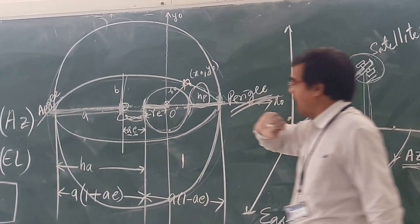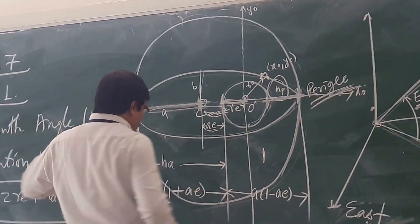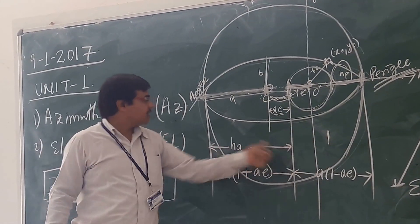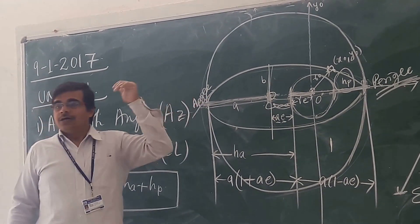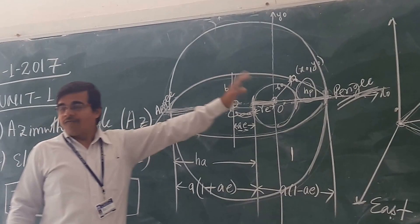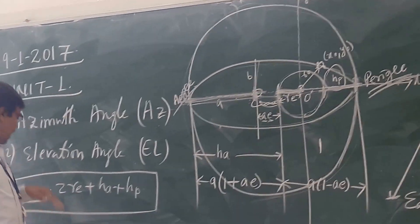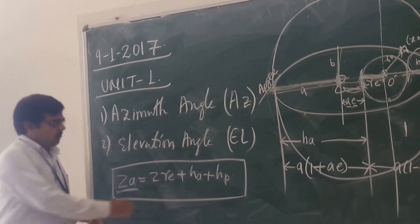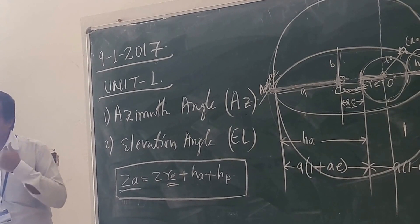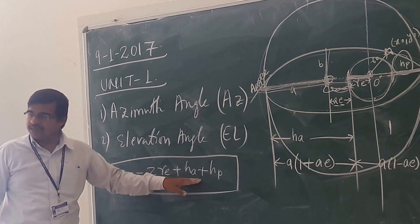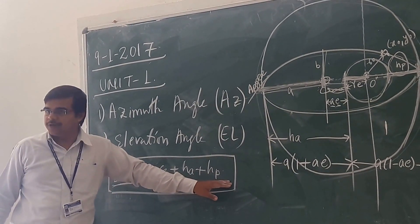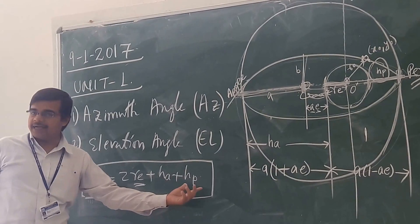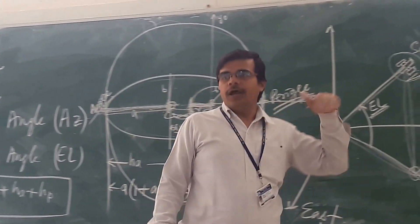This is the distance of your perigee (hp). And similarly, you are having ha. This is your ha — the distance of your apogee. If I am seeing this from this figure, can I say that your 2a is equal to 2re, where re is the radius of the Earth, plus ha plus hp. Where ha is the distance of your apogee, and your hp is the distance of your perigee.